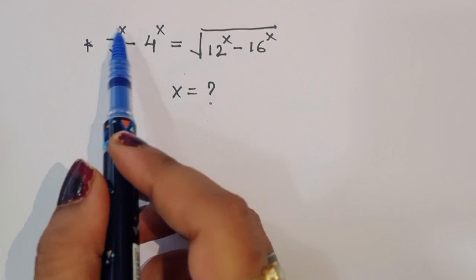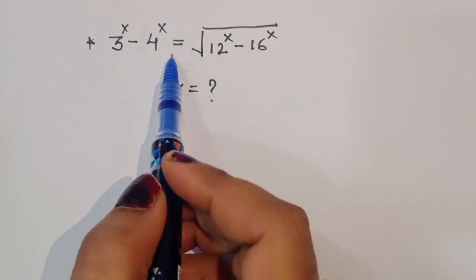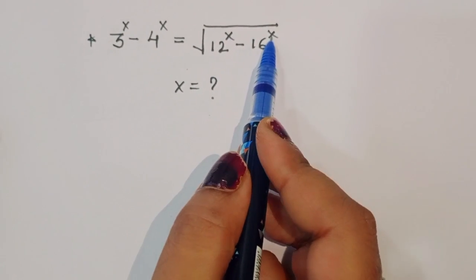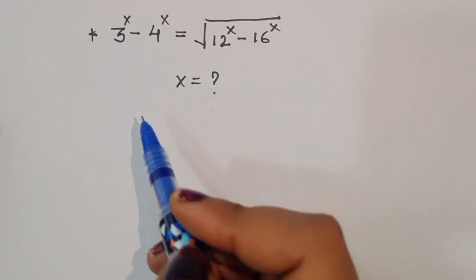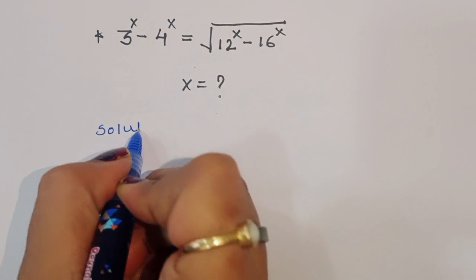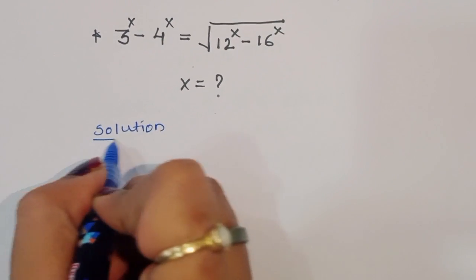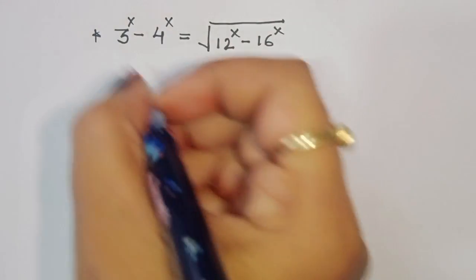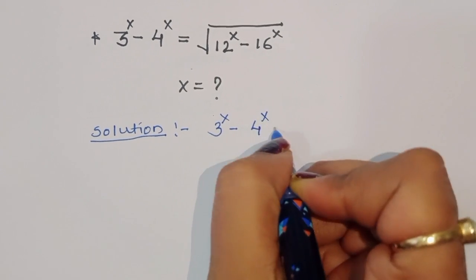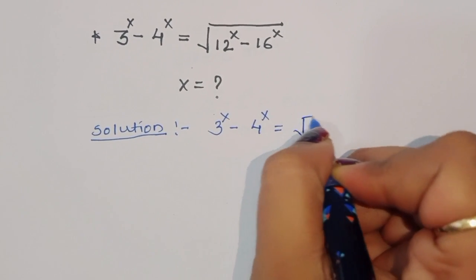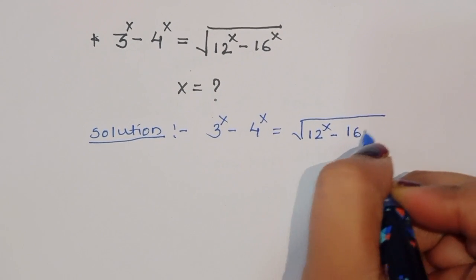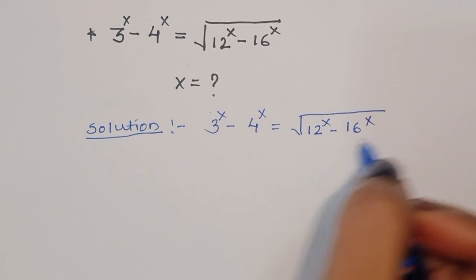The question is: given 3^x minus 4^x is equal to the square root of 12^x minus 16^x, we have to find out the value of x. Let's see how we can find the solution.